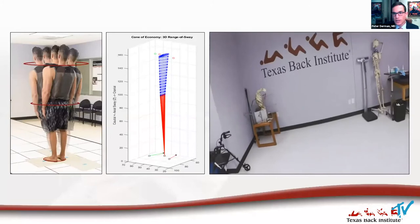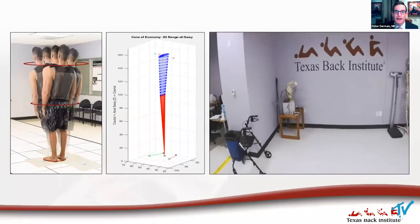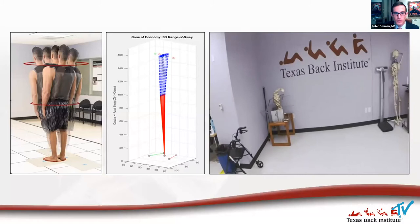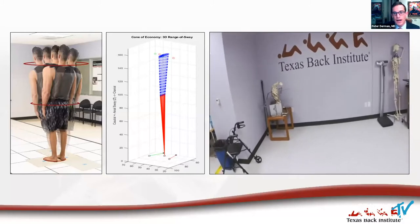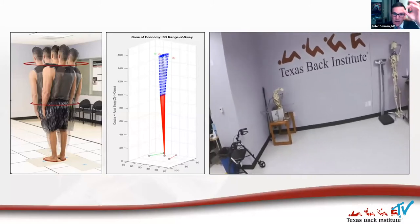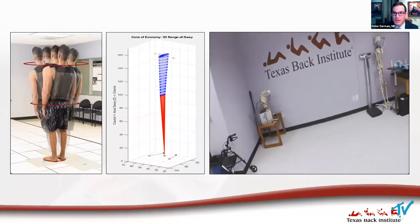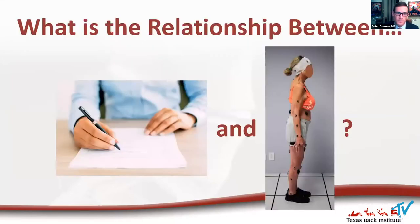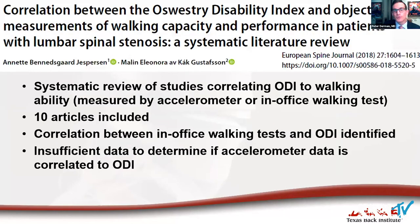We also look at balance — this is a cone of economy, measured with human motion capture but also with a GoPro that can be put on the patient's head to watch and measure their sway. So what's the relationship between patient reported outcome measures and our functional analysis? There is some data on this.